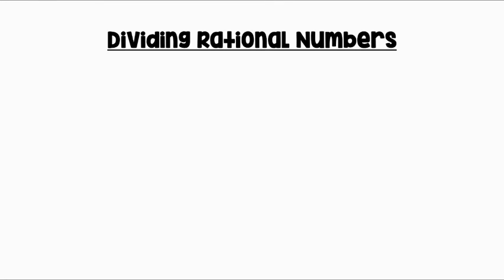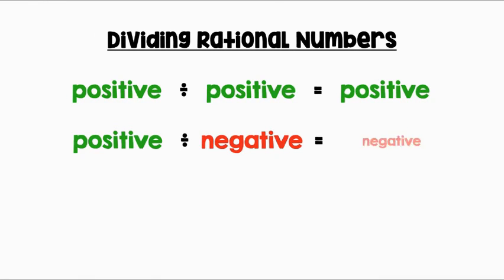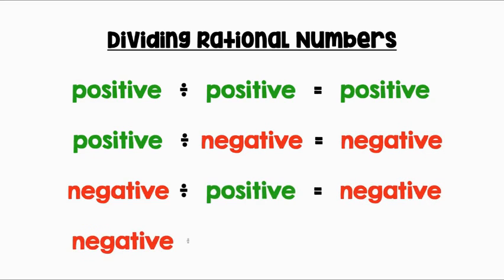Let's review our rules for dividing rational numbers. A positive divided by a positive equals a positive. A positive divided by a negative equals a negative. A negative divided by a positive equals a negative. And a negative divided by a negative equals a positive.